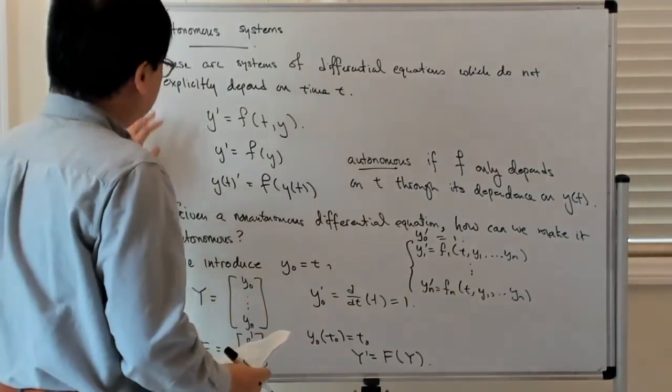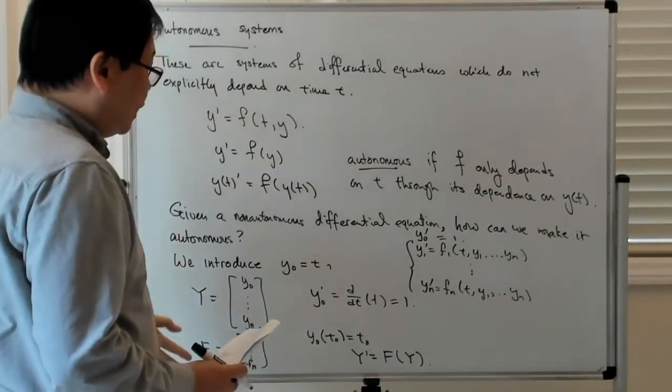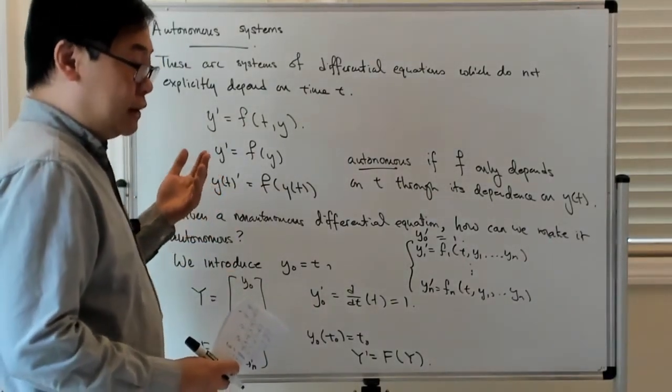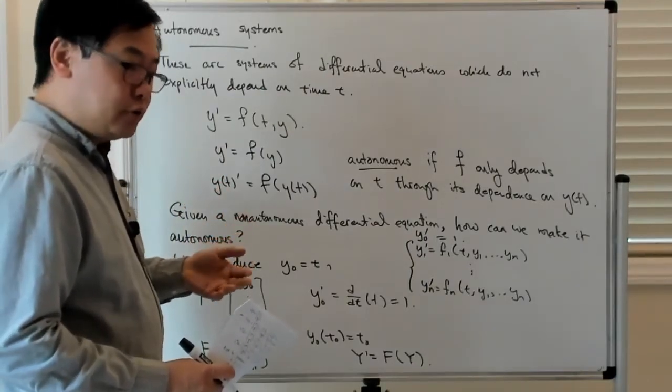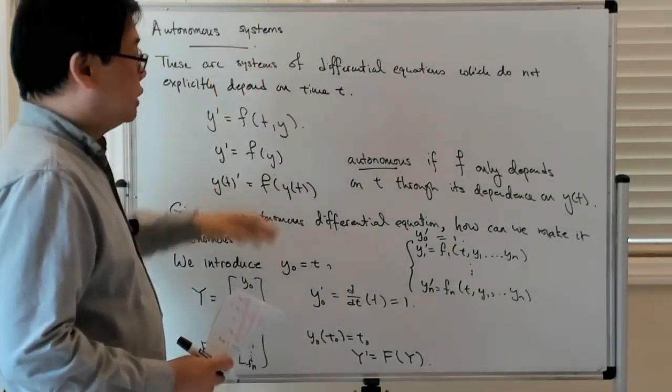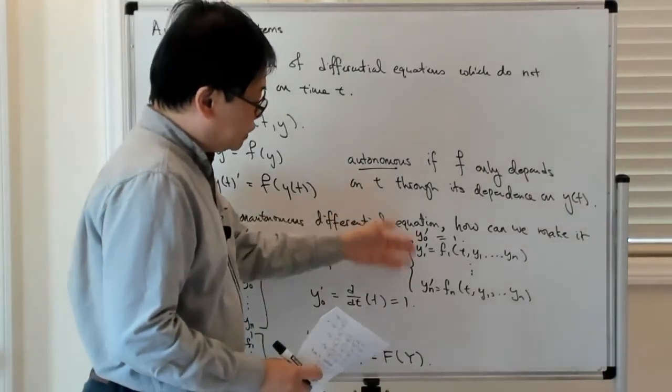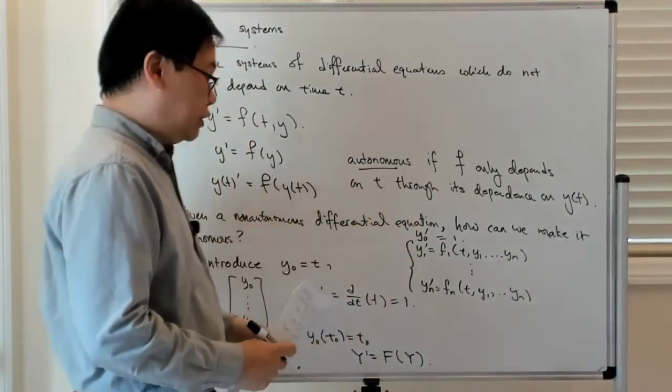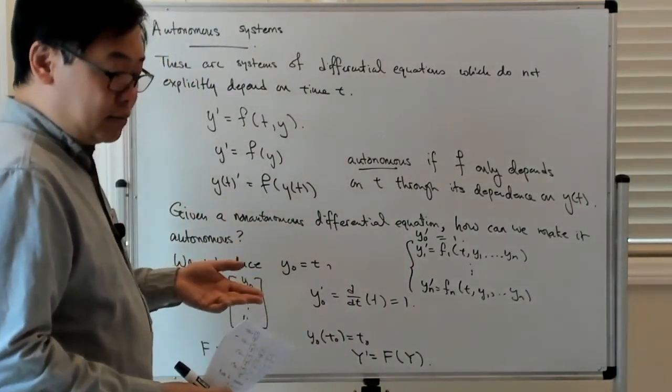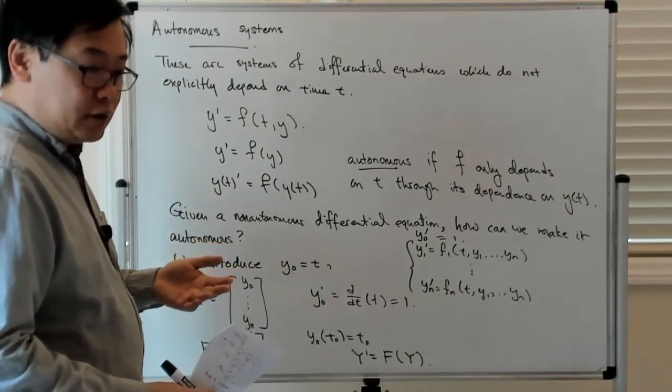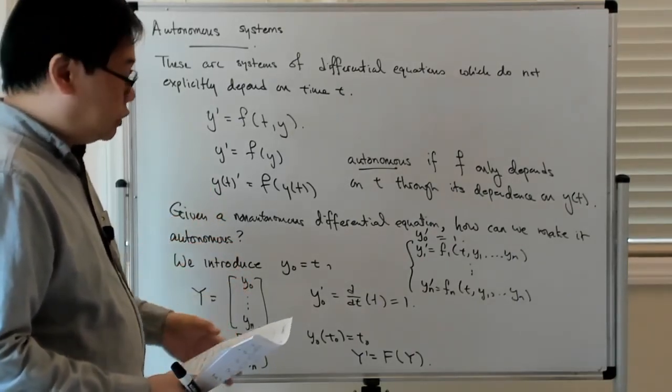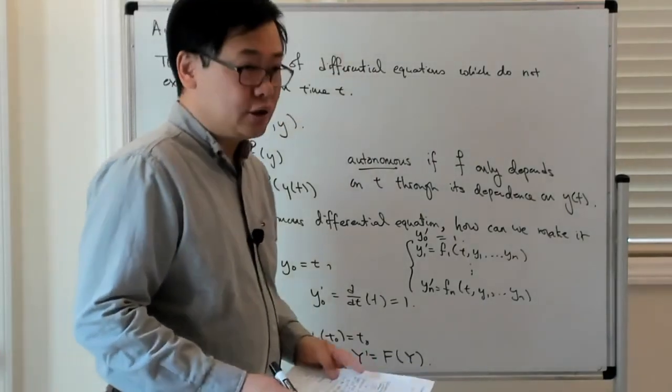So that's how you deal with autonomous systems. And as you might expect, you can combine all these ideas which we talked about. We've talked about how to take a system of higher order differential equations and convert it into a system of first order equations. We've just talked about how you can take a system of non-autonomous differential equations and convert it into a system of autonomous ones. And obviously you can convert a system of higher order non-autonomous differential equations into a system of first order autonomous differential equations. So let me just stop here for now.